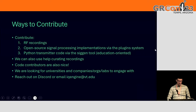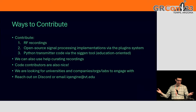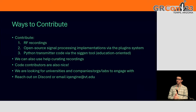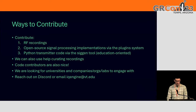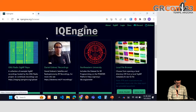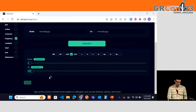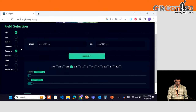We're also looking for universities and organizations to engage with, to figure out if the features we have on top of our mind align with what folks want. In the end, this is an open source community-driven project — not under any specific organization. If you want to chat, reach out on Discord, or email iqengine@vt.edu. One last thing I wanted to show off is querying. We have a basic query system that lets you search over frequency, date, et cetera — what you'd expect.